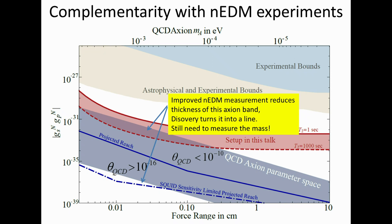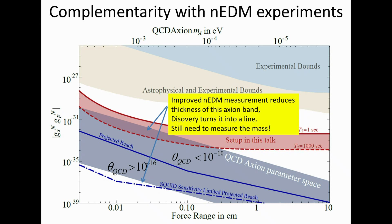This type of measurement has complementarity with neutron EDM experiments — the upper boundary of the band is set by the neutron EDM. Improving the neutron EDM limit narrows the parameter space. If the neutron EDM is discovered, this band collapses to a line, and this experiment would be needed to measure the force range. Conversely, if Ariadne makes a discovery, you'd still want to measure the neutron EDM to confirm it's really the QCD axion rather than some other axion-like particle unrelated to the neutron EDM.